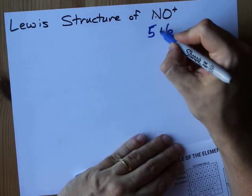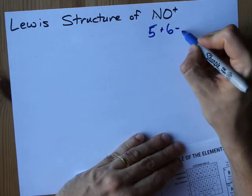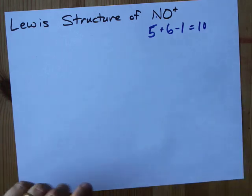So it's 5 for nitrogen, 6 valence electrons for oxygen, and a plus charge means that you lose an electron to give 10 electrons total.